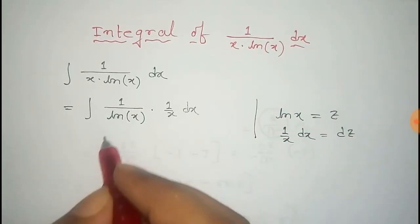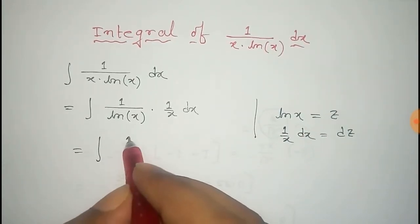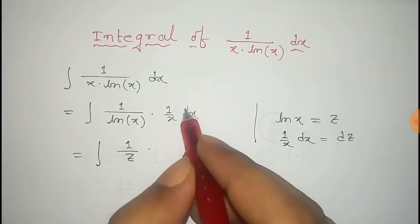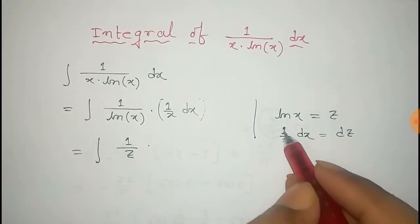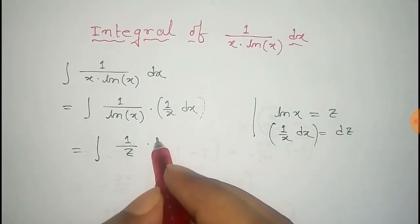Now put the value of log x in that case that is 1 by z and the value of 1 by x dx is that, that is equals to dz. So dz.